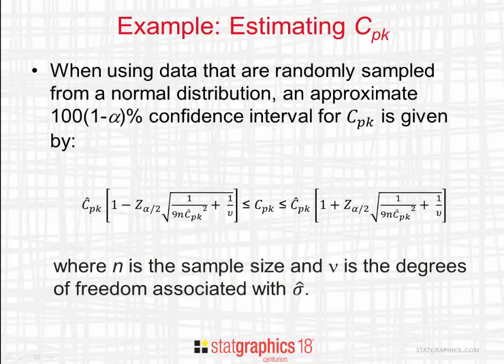Whenever we try to estimate a process capability index without examining every item that's being produced, there'll be some error associated with that estimate. For example, if I want to estimate CPK using data that are randomly sampled from a normal distribution, an approximate confidence interval for CPK is given by the expression you see here.